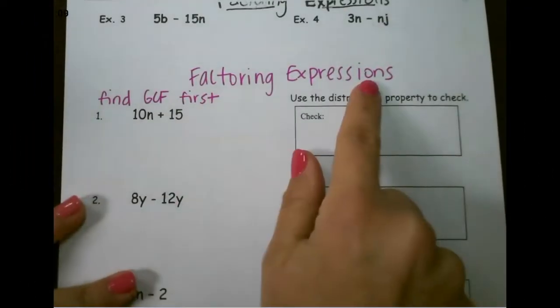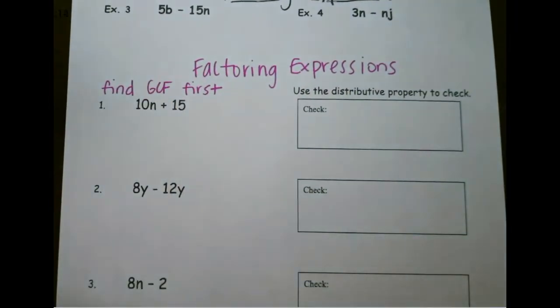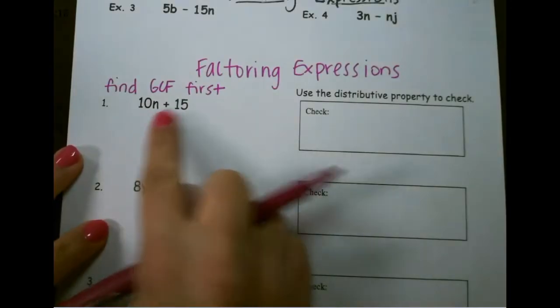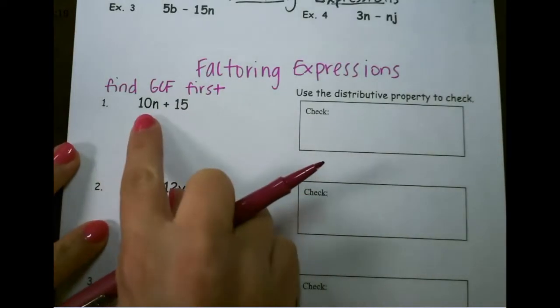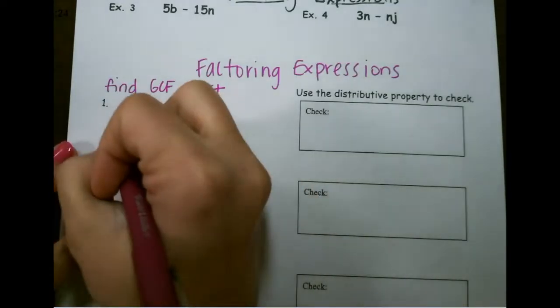Let's talk about factoring expressions. First, we have to find the GCF, which is the greatest common factor. The greatest common factor is going to be the highest number that goes into both of our terms. So here we have 10n and 15. The greatest common factor for these is 5.